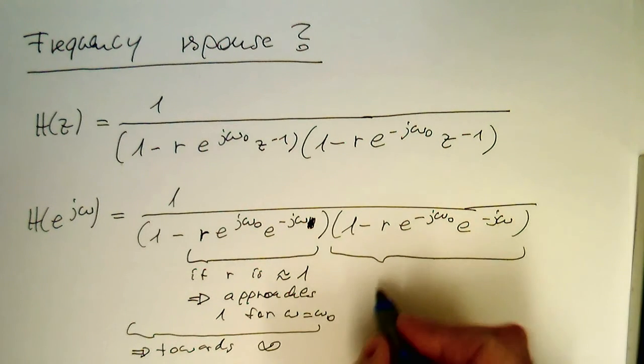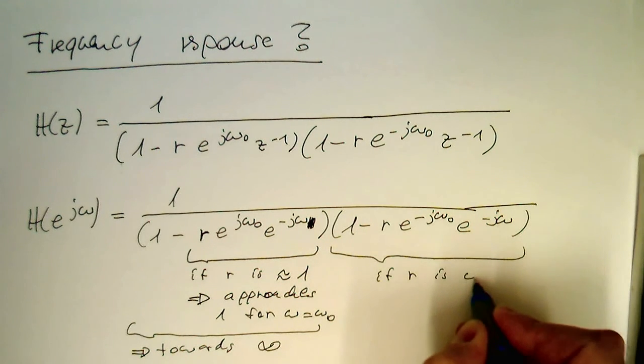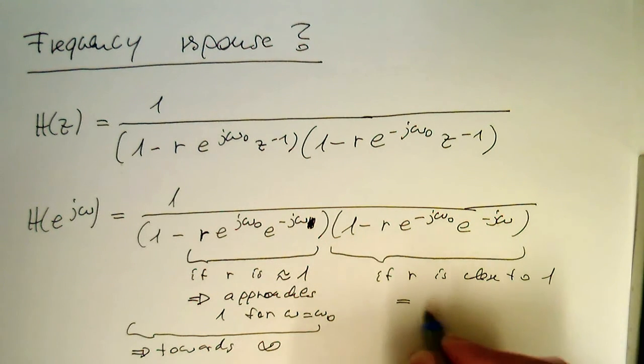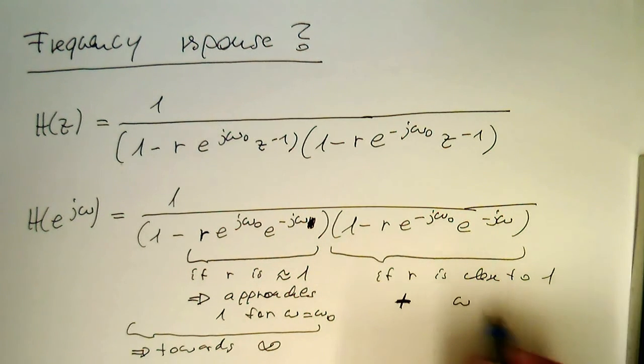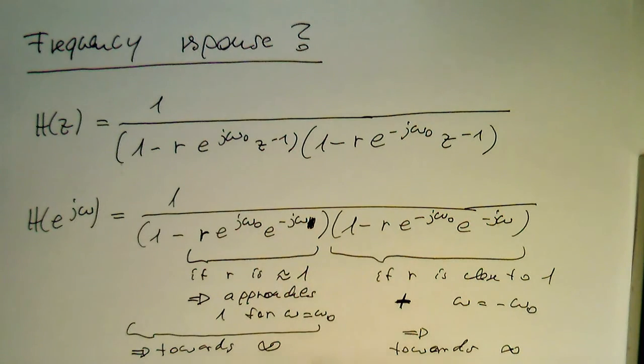So if r is close to 1, and at the same time omega equals to minus omega 0, then this means this here goes towards infinity. So this means we have something like a resonance here.